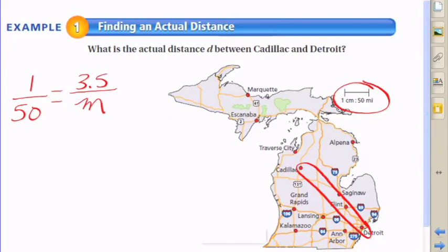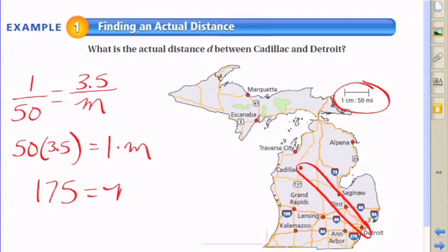I measure about 3.5 centimeters on the map. Of course, you would have a ruler. What I do is match that up with the ratio of 1 to 50, so I make 3.5 to m, our unknown measure in real life. So I do 50 times 3.5 and I get 175.